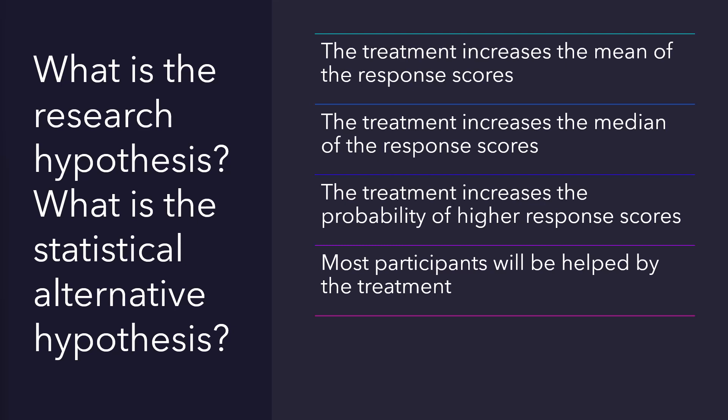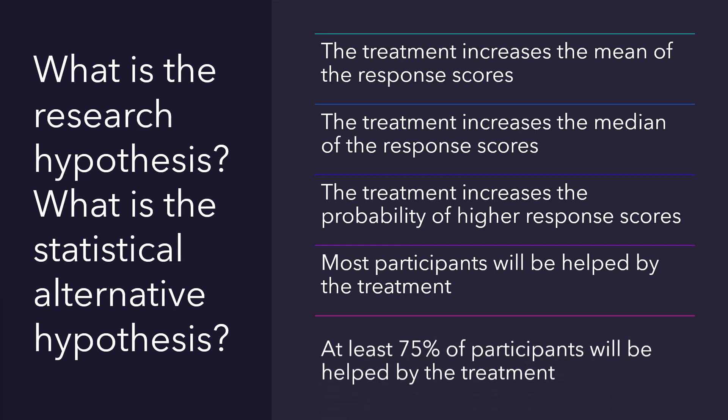The word 'most' might be arbitrary. Perhaps we would like to know if at least 75% of the participants will be helped rather than 'most participants,' which could mean just over 50%. The researcher is best equipped to define expectations — the research hypothesis should dictate the statistical hypothesis and the accompanying analysis, and not the other way around. Any of these hypotheses, including the mean-based one, can be tested using nonparametric methods.